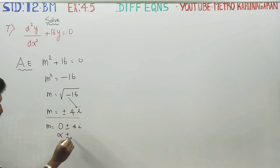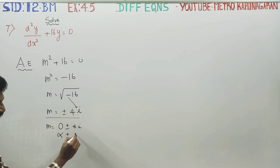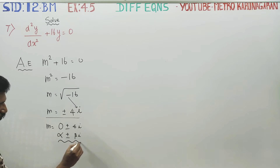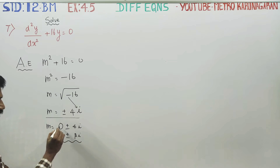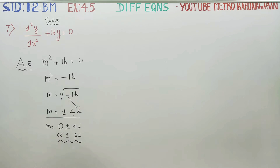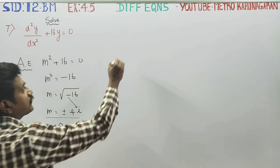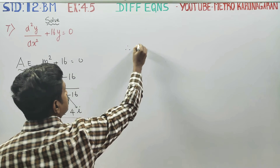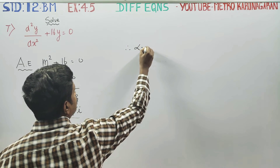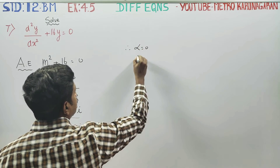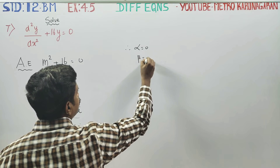This matches the form alpha plus or minus beta·i, giving alpha plus or minus 4i. Therefore, alpha is equal to 0 and beta is equal to 4.